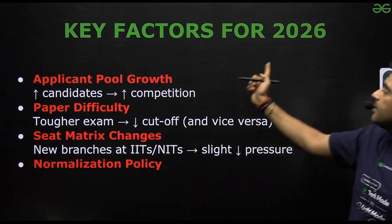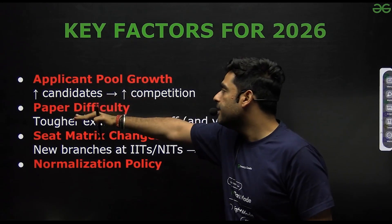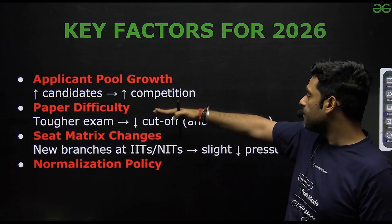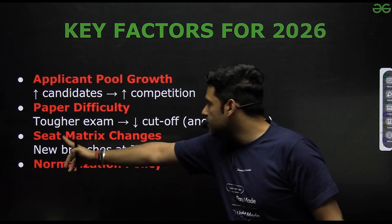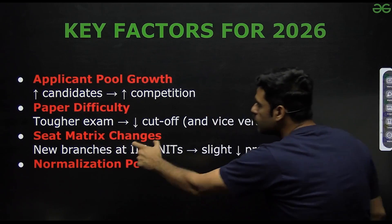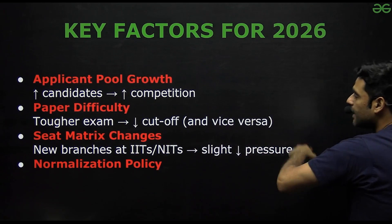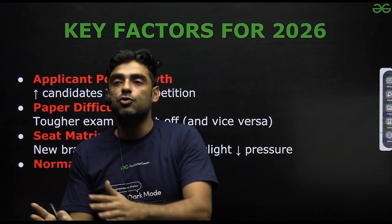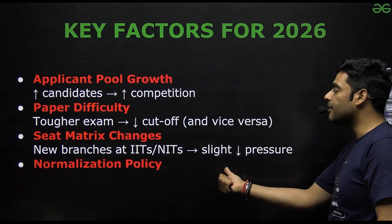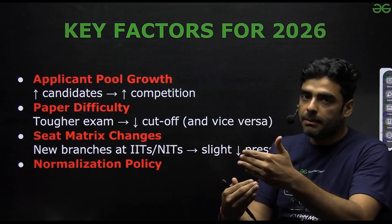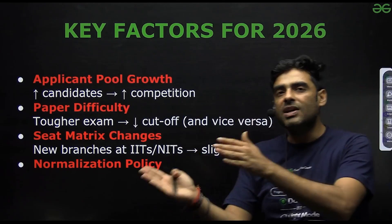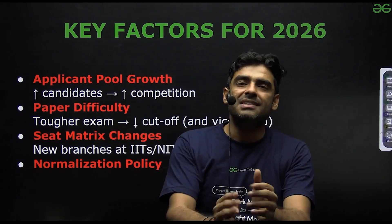The key factors affecting cutoffs are: applicant pool growth — if candidates are increasing, competition also increases; paper difficulty — if the exam is tougher, the cutoff will be lower; and seat matrix changes — since the DA branch was introduced in IITs, there will be some pressure on CSC seats offered through the GATE CS exam versus GATE DA. There will be slight discrepancy and pressure. Normalization policy also always exists, which makes a difference in actual marks.